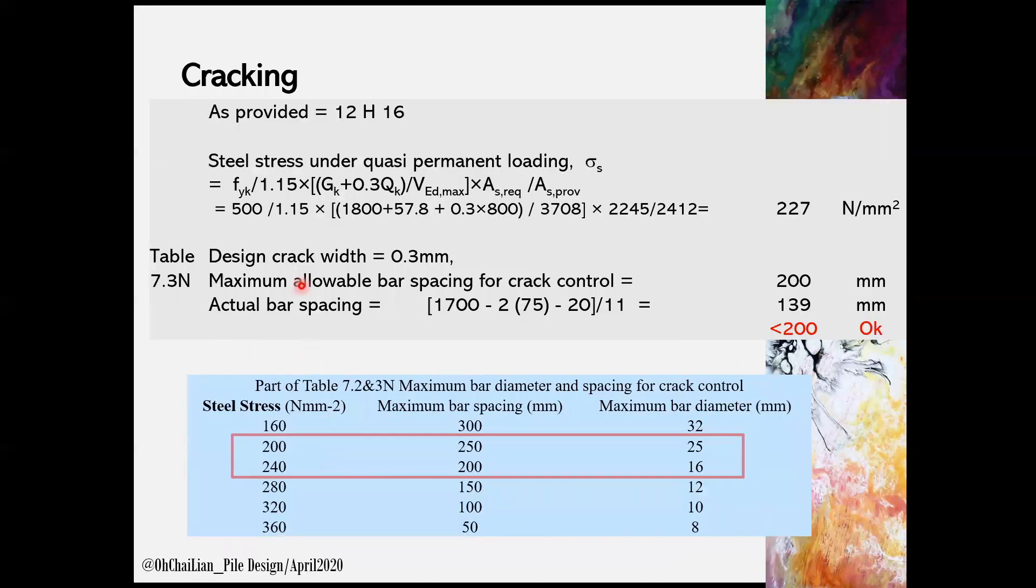Next, we need to perform a check for cracking control. Table 7.2N and 7.3N are used for the check. Steel stress under quasi-permanent loading can be obtained using the equation shown.